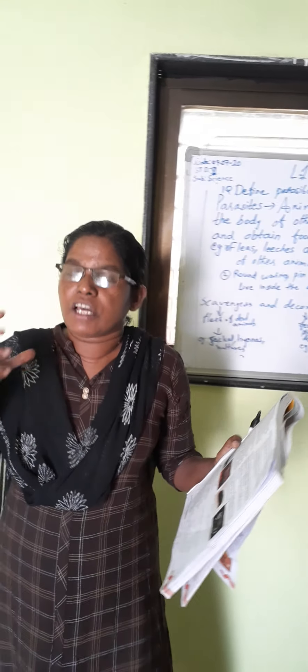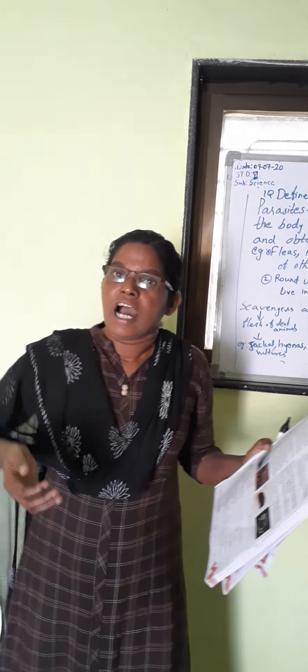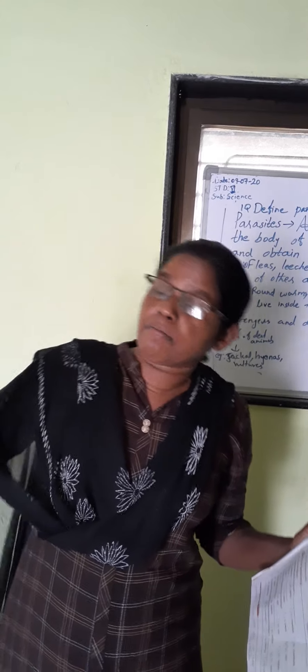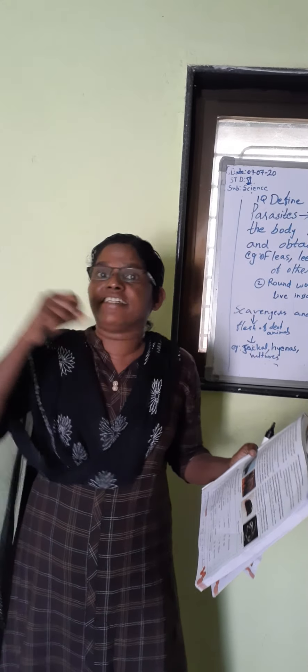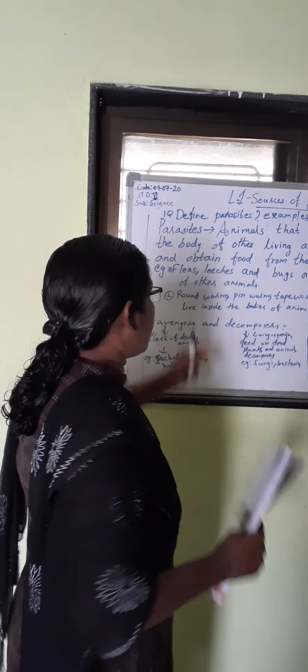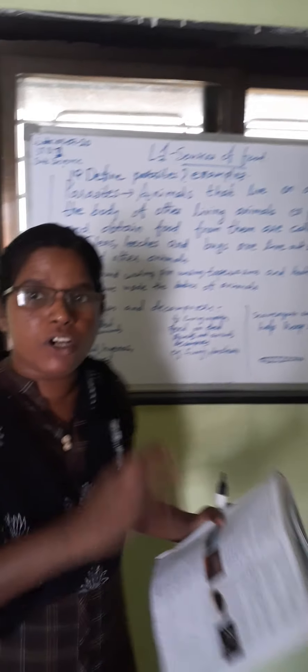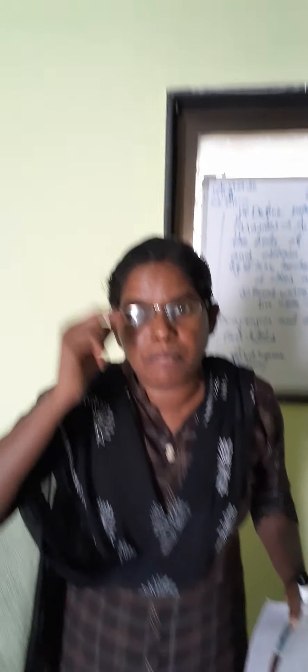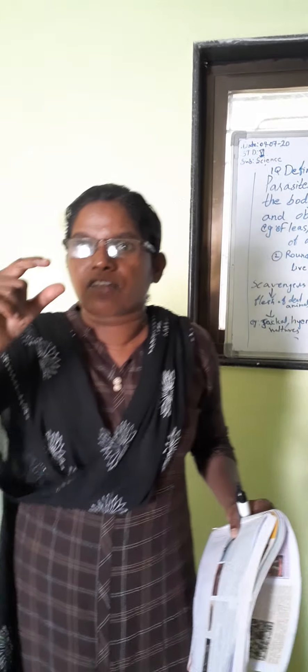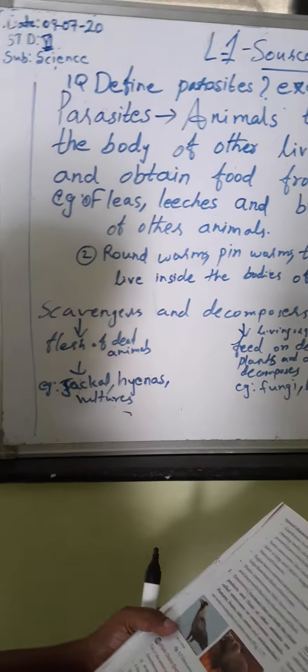Roundworm and pinworm are present inside. The food we eat — those other animals are eating that food totally. And outside animals also bite us. Our body outside, our hair also — some small animals are there. They are very smooth; on our hair and skin they live and eat. That part only they are eating — that is the host.